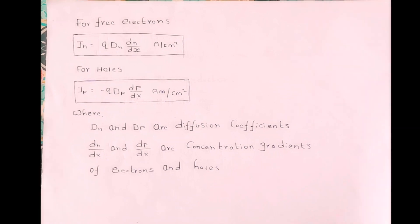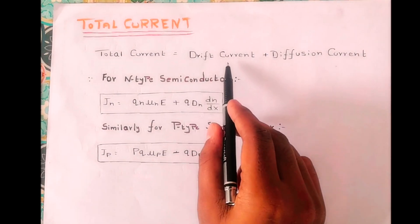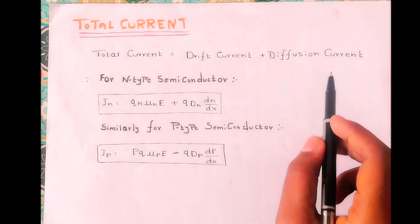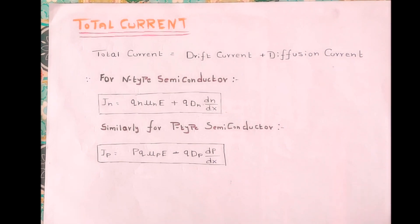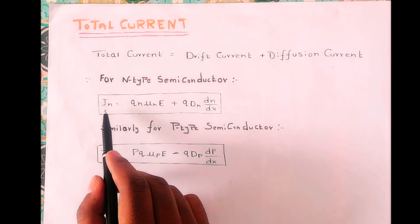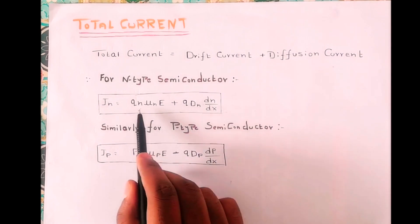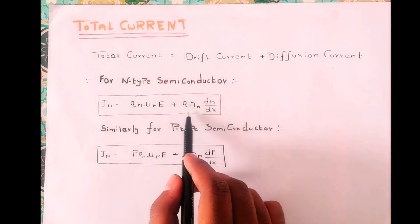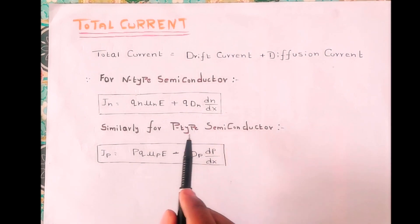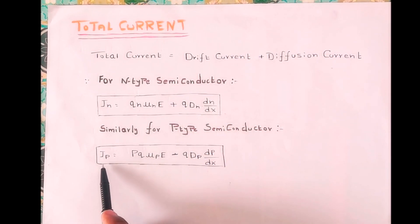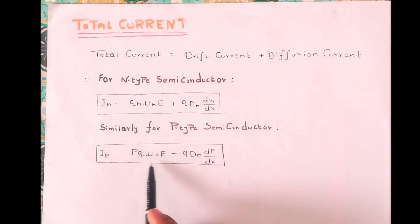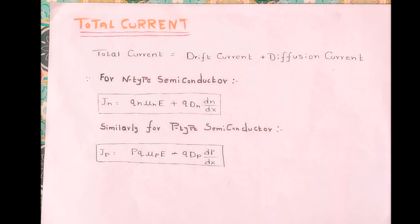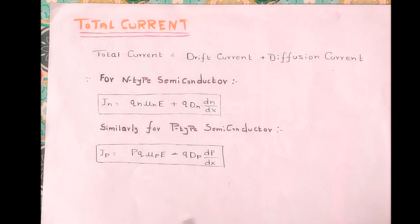Now let's discuss total current. Total current equals drift current plus diffusion current, where drift current is caused by the applied external electric field and diffusion current is caused by the concentration gradient. The total current expression for n-type semiconductor is denoted by Jn, combining the drift current expression for free electrons and the diffusion current expression for free electrons. Similarly, the total current expression for p-type semiconductor is denoted by Jp, combining the drift current expression for holes and the diffusion current expression for holes.